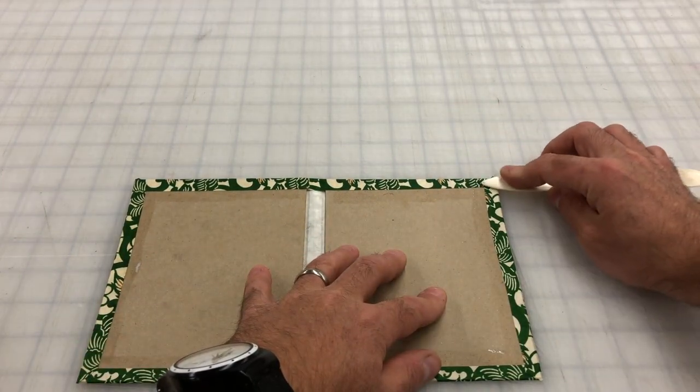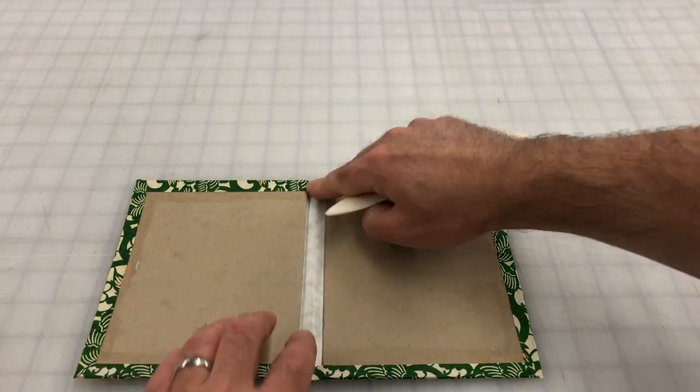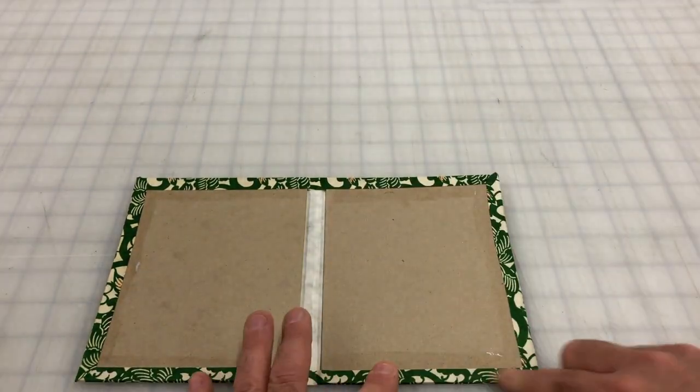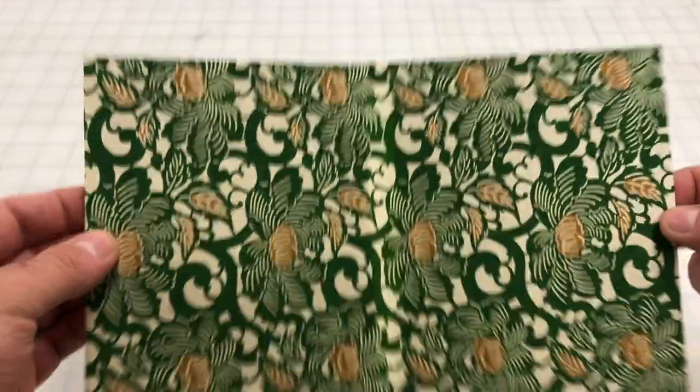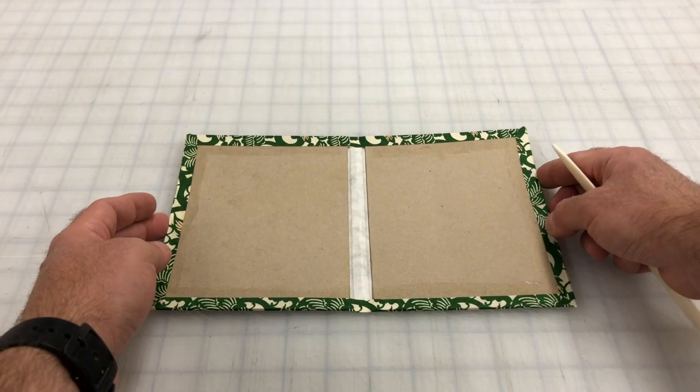Here's my bone folder, you can get a bone folder at the art store or at hobby shops online as well. This one happens to be made out of actual bone, but they're made out of plastic now as well. And there's the main part of the book from the outside.